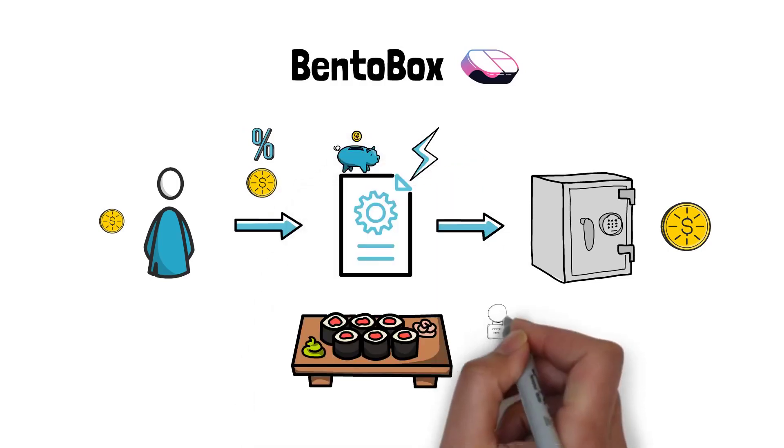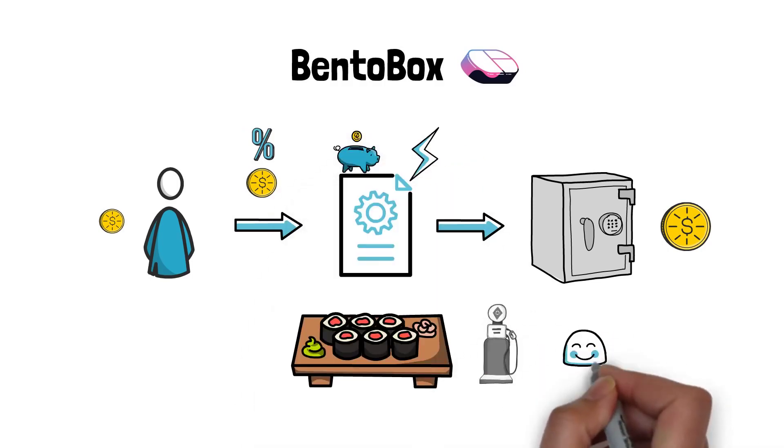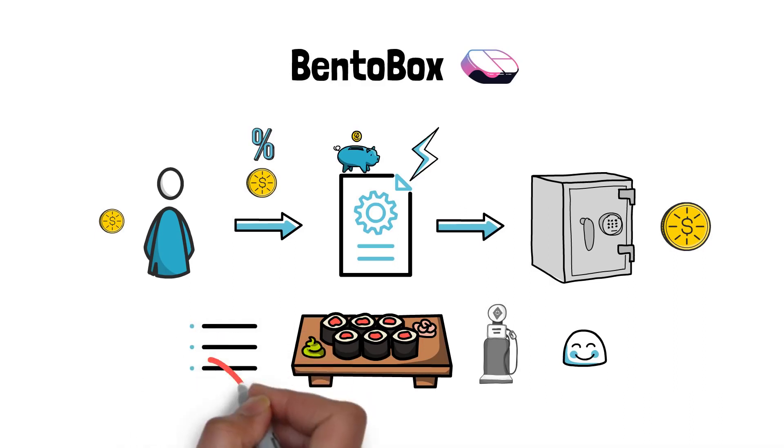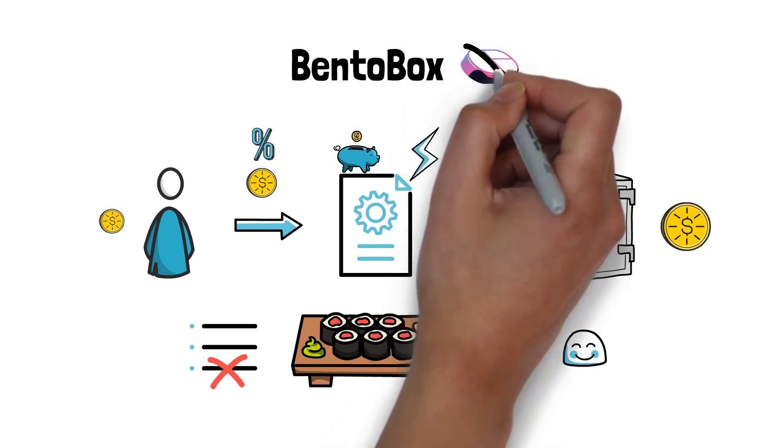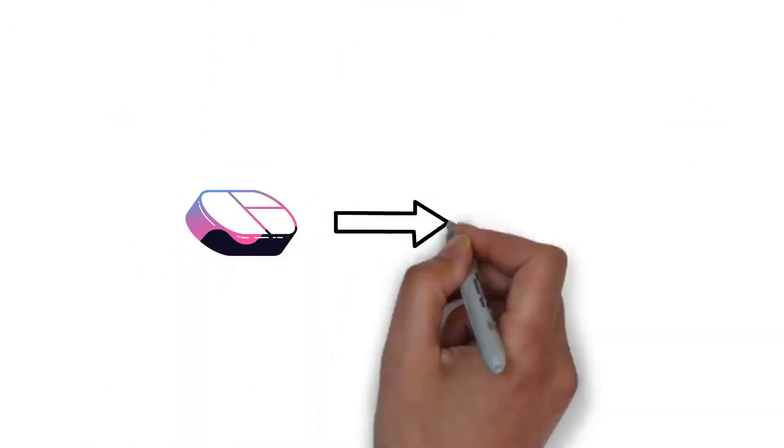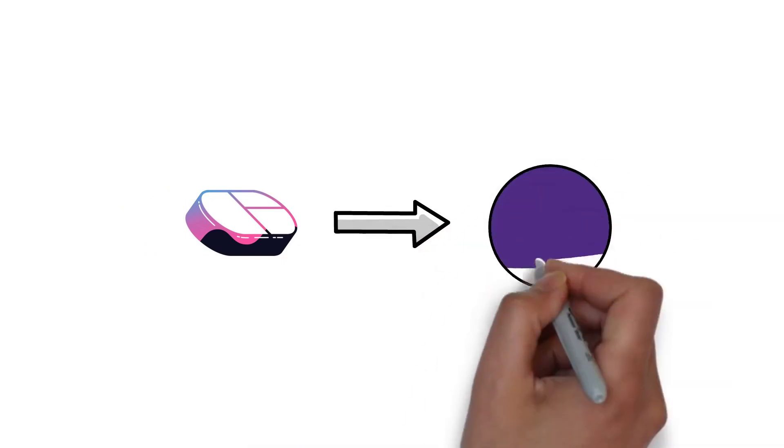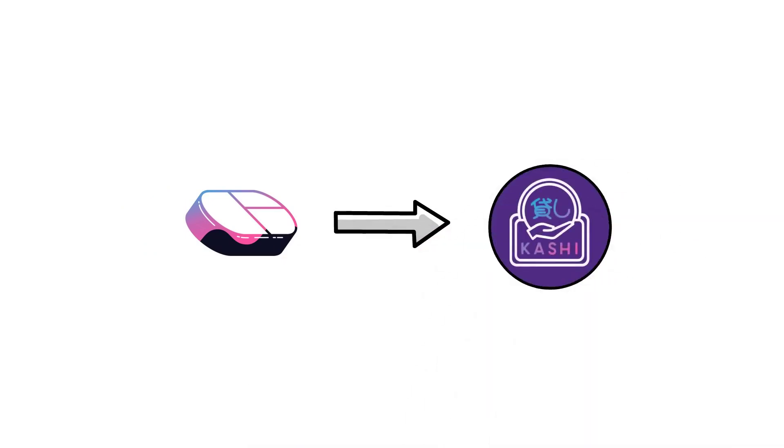This structure is also very gas-efficient, as different applications operating on the same vaults don't have to go through as many steps as they would have to go through without the BentoBox architecture. At the moment, the first and only available Bento-enabled application is the lending platform Kashi, but the team is working on bringing more applications to BentoBox in the future.